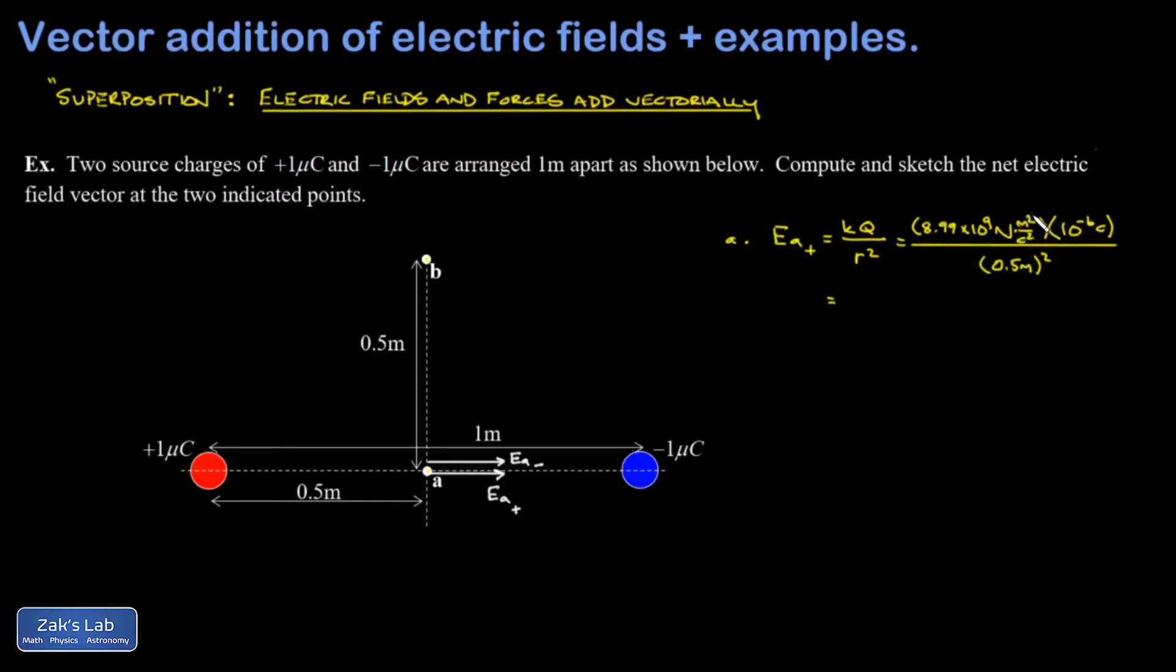And so I have meters squared up here canceling meters squared in the denominator. One factor of coulombs cancels, and I'm left with newtons per coulomb as my familiar unit of electric field. When I do this, I get 3.60 times 10 to the fourth newtons per coulomb.